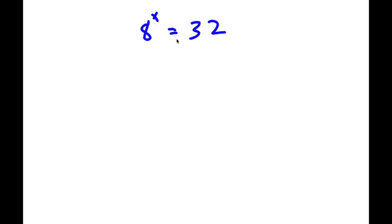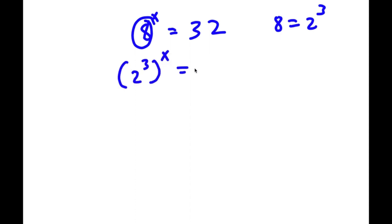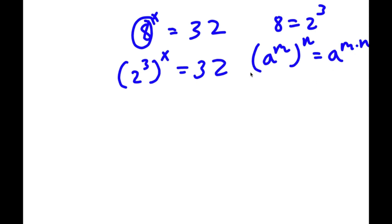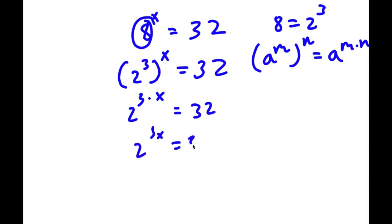Alright, so what I'm first going to do is rewrite 8 as 2 to the power of 3, because 8 equals 2 to the power of 3. So now I have 2 to the power of 3 to the power of x is equal to 32. Using the rule a to the power of m to the power of n equals a to the power of m times n, I get 2 to the power of 3x is equal to 32.